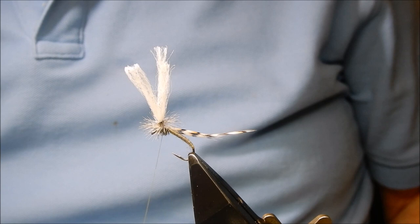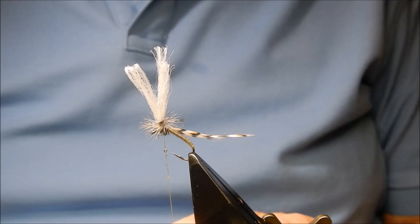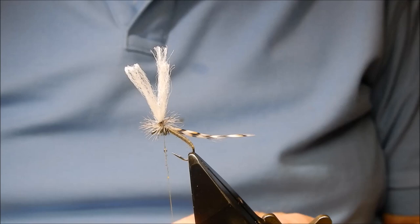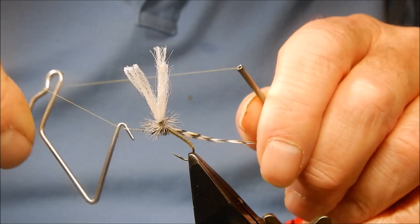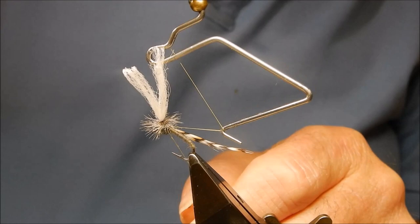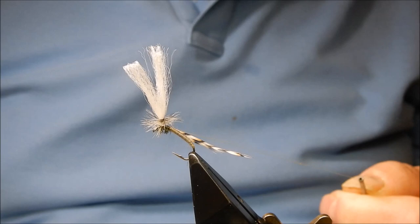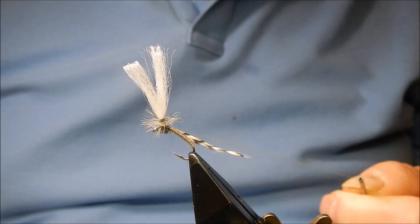All we need to do to complete is a bit of varnish on the thread there and just a whip finish. Make sure it goes in as you normally would. That's all you need to do. Pull it tight. Snip it off.